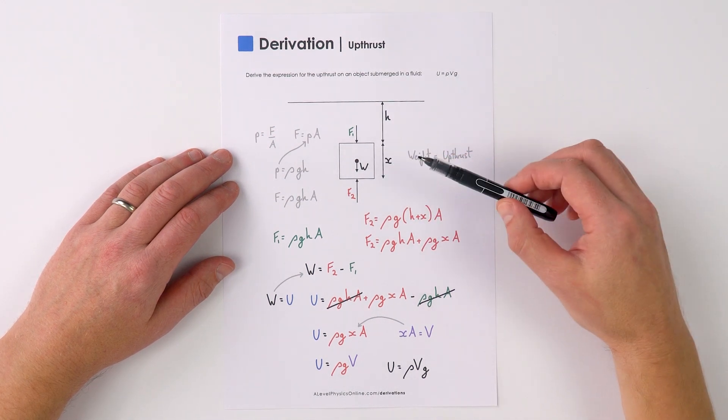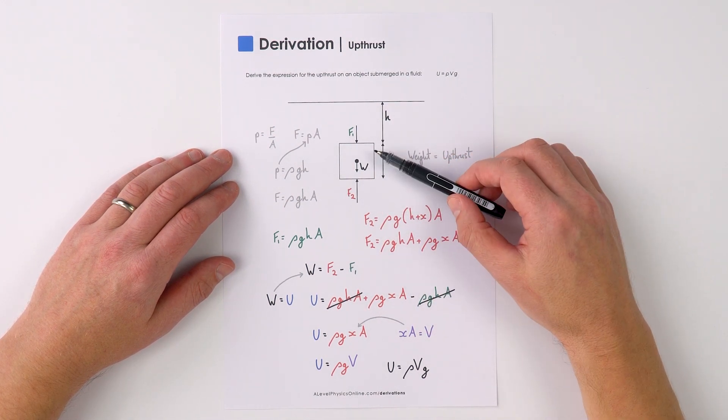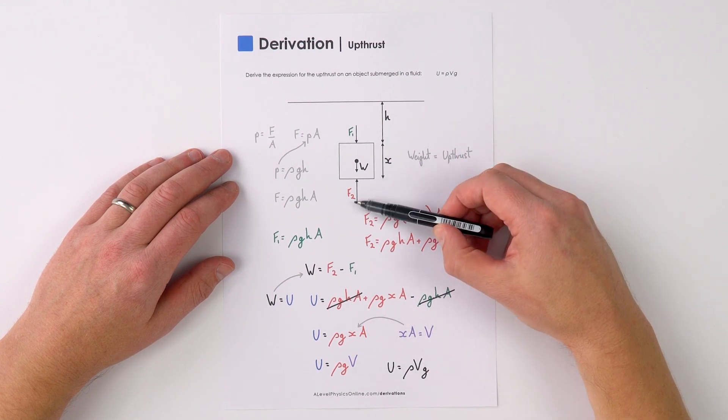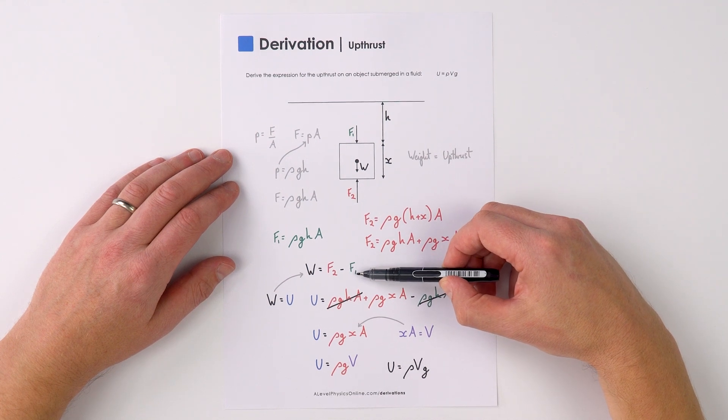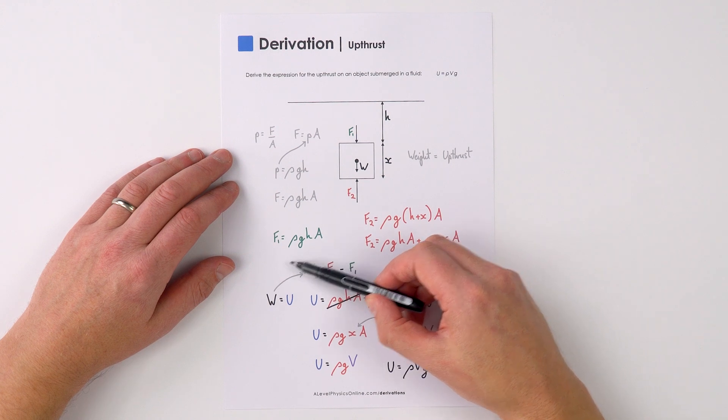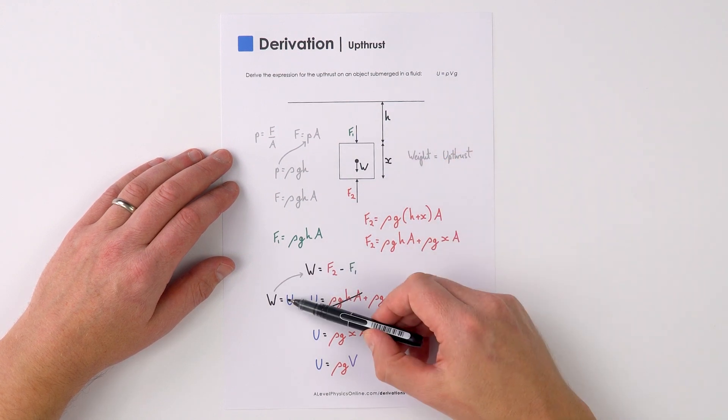Now if we think about this object here, it's in equilibrium at this time, so the weight acting down is equal to the force up F2 take away the force F1. And the weight of that object is equal to the upthrust acting on it.